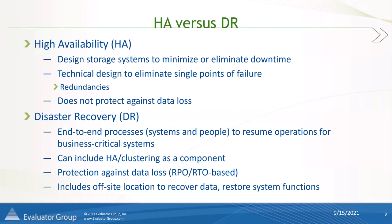Even with all this, we sometimes get asked by customers: my system is architected for high availability to have maximum uptime — so why do I need data protection on top of that? I want to break down some of the differences between high availability (HA) and disaster recovery (DR). I tend to think about two fundamental differences. From the standpoint of HA, it tends to handle problems that occur when a system is running, versus DR tends to handle problems after a system has failed.